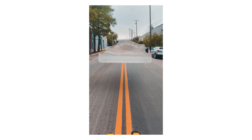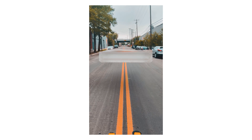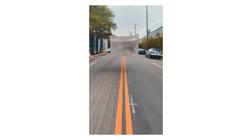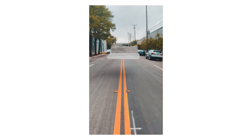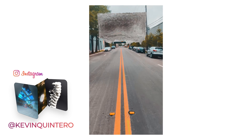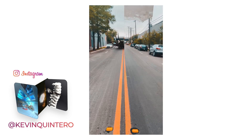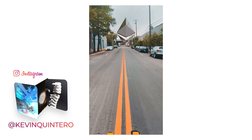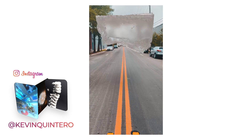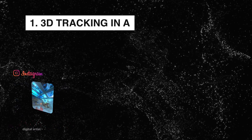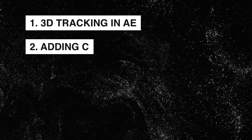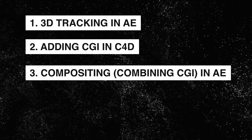In this video you will learn how to add 3D objects, 3D models, or any kind of animation into real life footage, sort of like in the intro. I divided the process into three main steps: 3D tracking your footage in After Effects, adding 3D CGI in Cinema 4D, and compositing the 3D elements in After Effects.